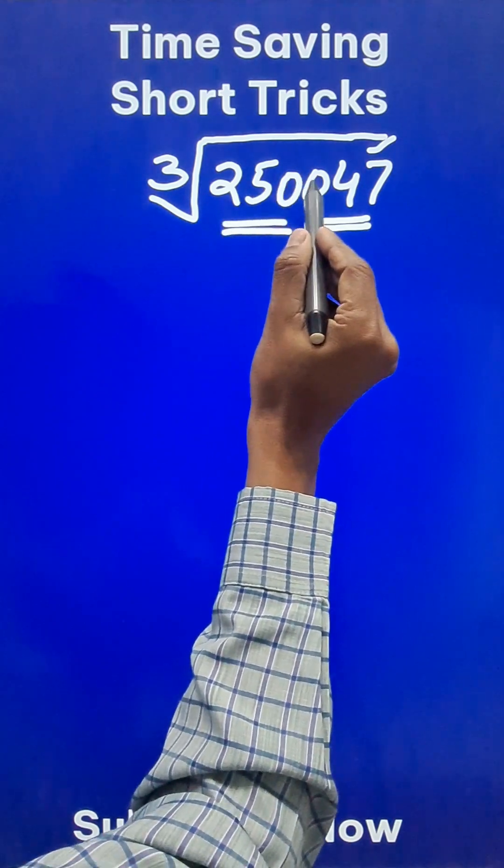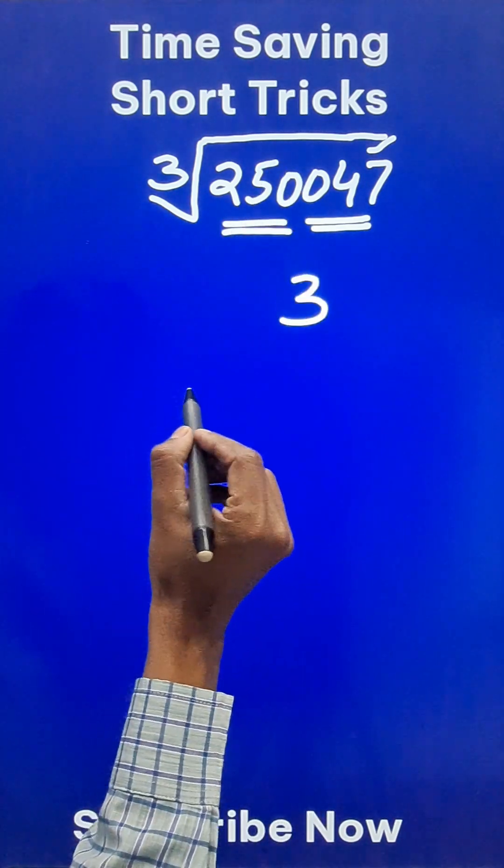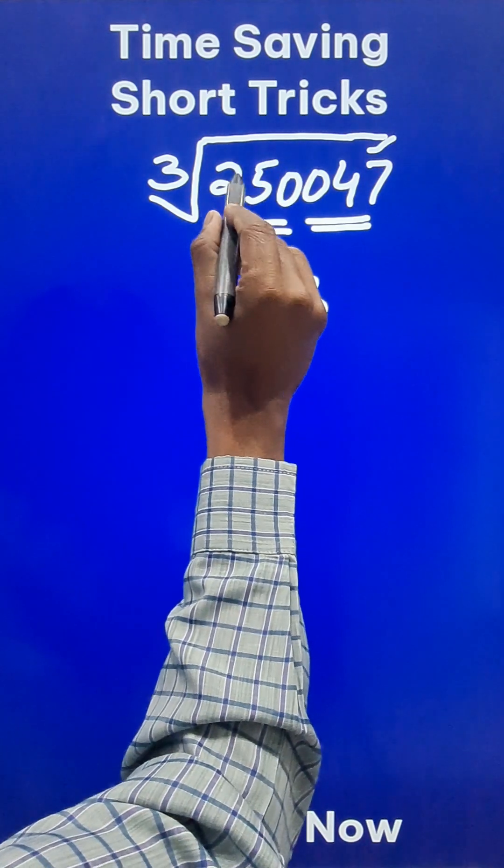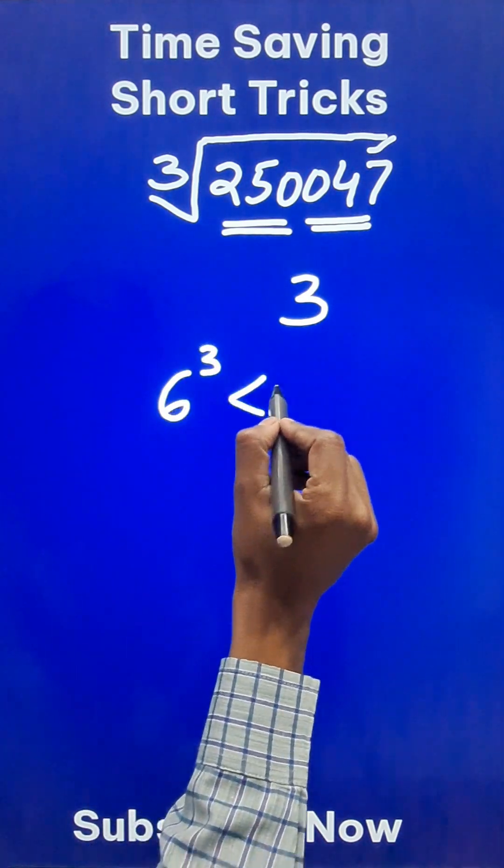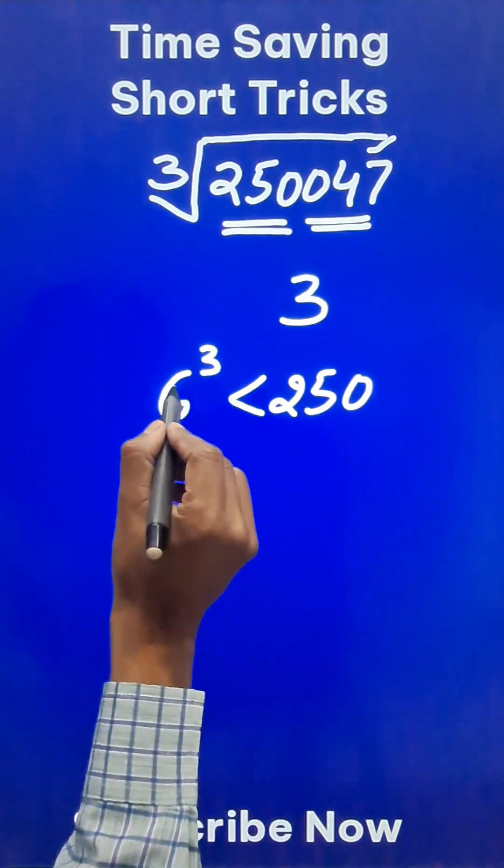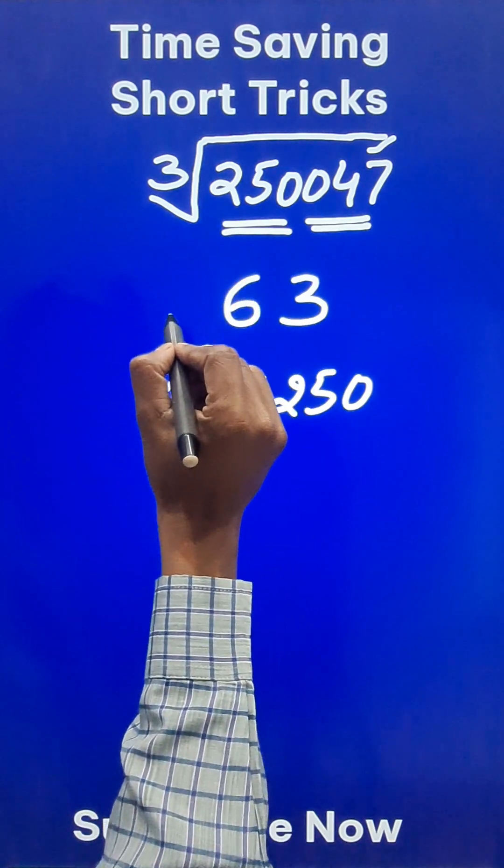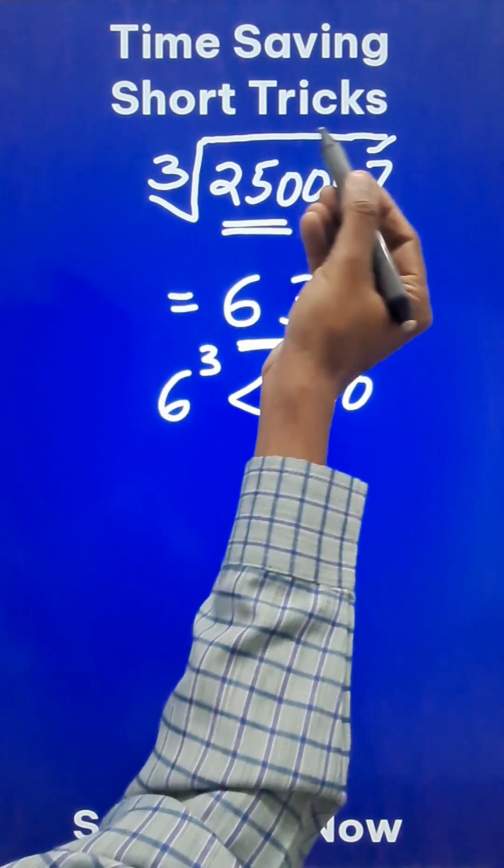The first triple, that is 2, 5, 0. I need a number whose cube is just less than this number 2, 5, 0. So if you know 6 cube, 6 cube is less than 250 but 7 cube is more than 250. So this number 6 forms the remaining part of the answer and there you have the cube root of this big number.